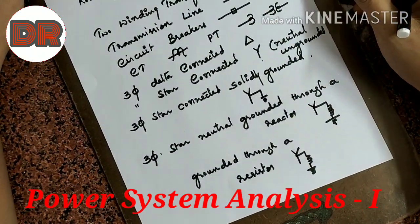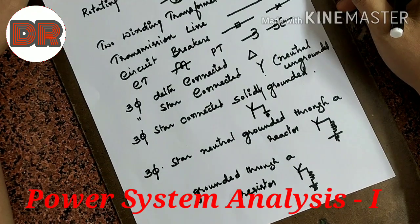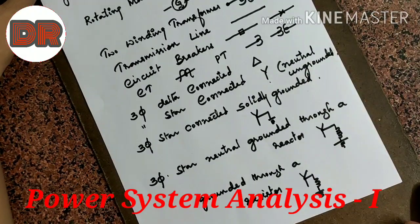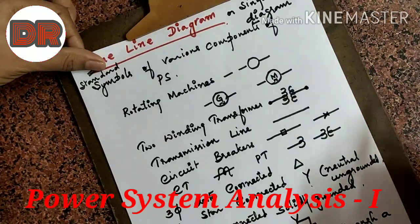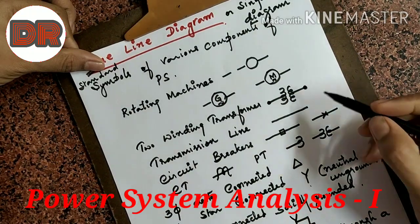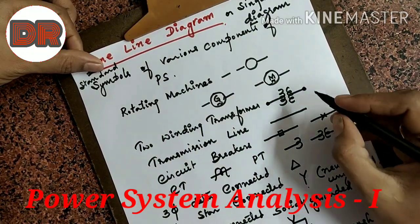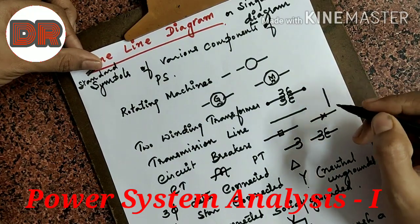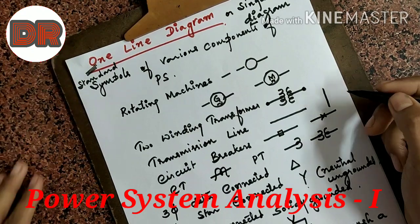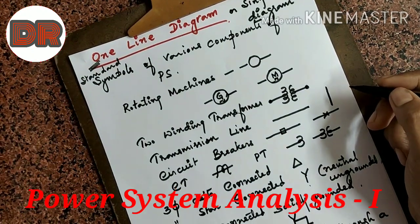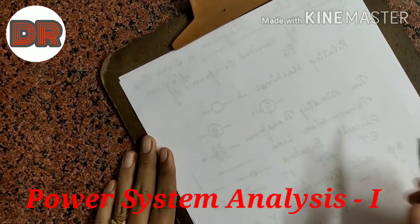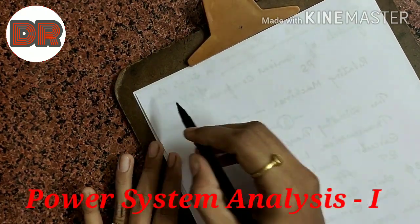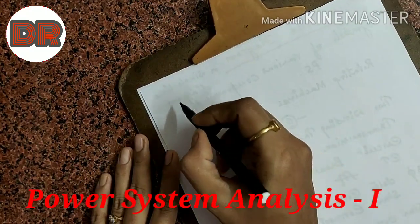These are the basic symbols used in the single line diagram. For the bus bar, we use a vertical line, similar to the transmission line symbol but vertical. A one line diagram and single line diagram refer to the same thing. Let us see one simple example.